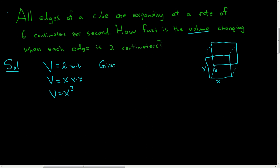We are given some information in this problem. We are told that the edges are expanding at a rate of 6 centimeters per second. So the rate of change of the edge—well we called our edge x, so dx/dt is the rate of change of an edge. And it's expanding, so we're going to have a positive 6.